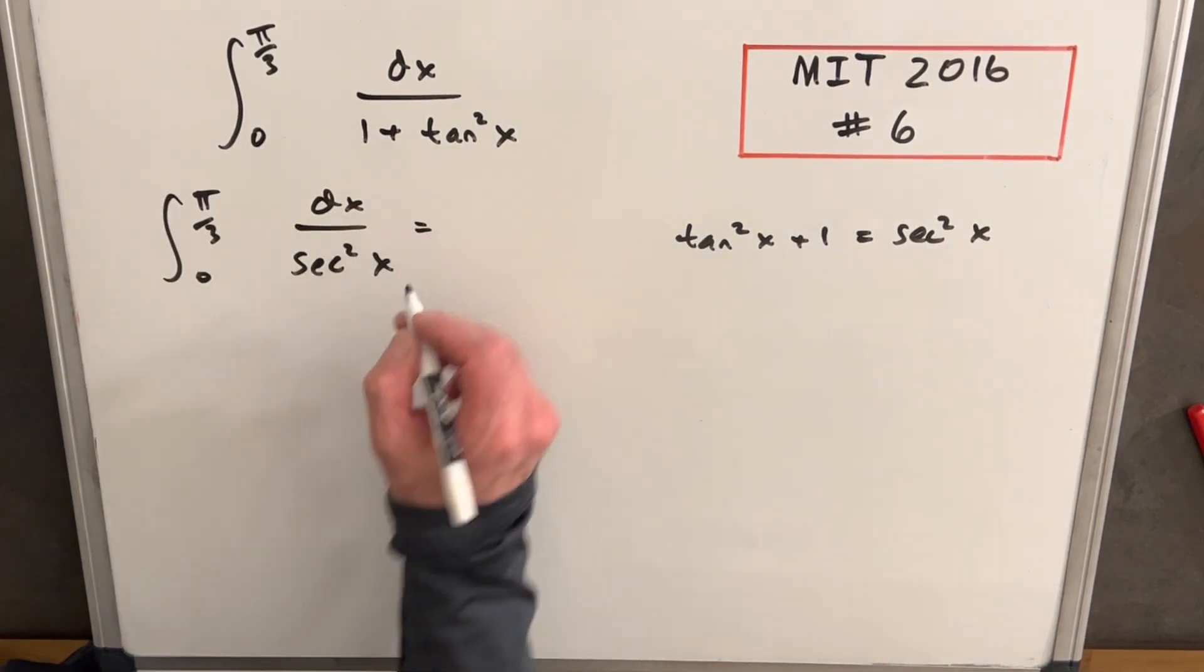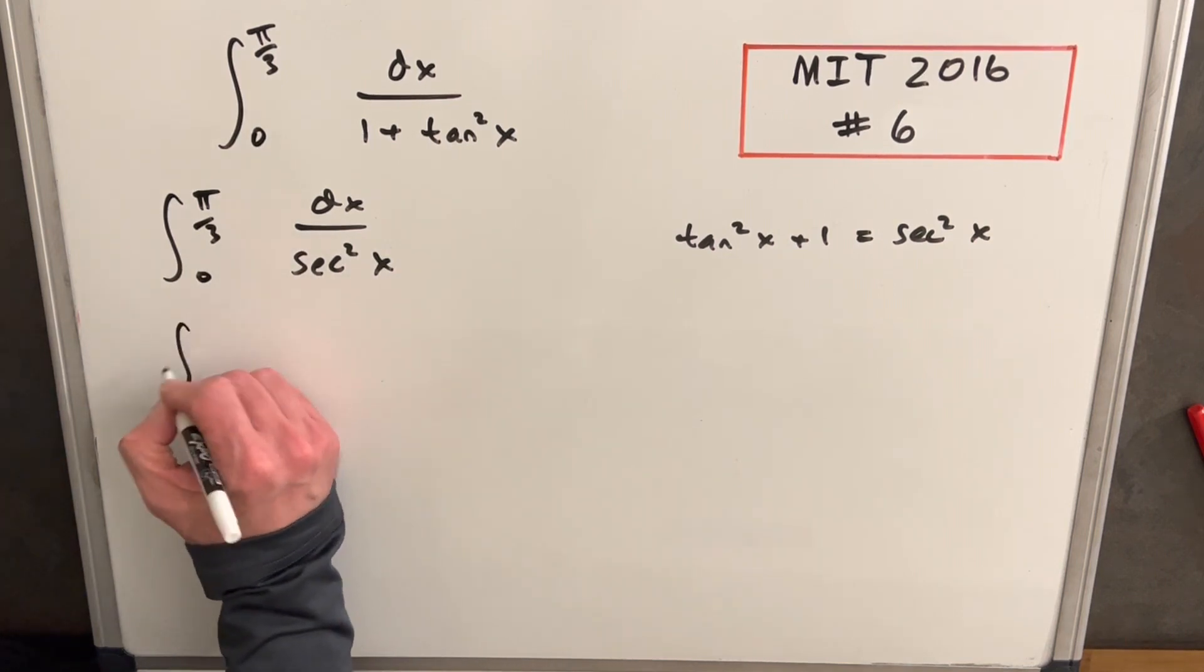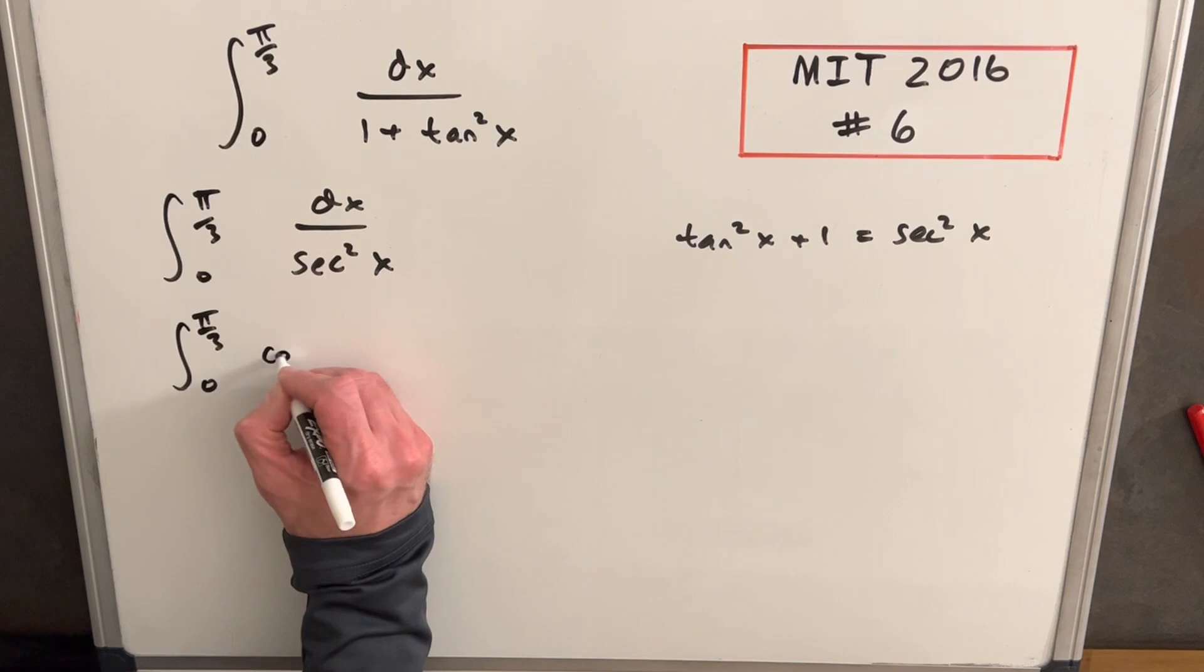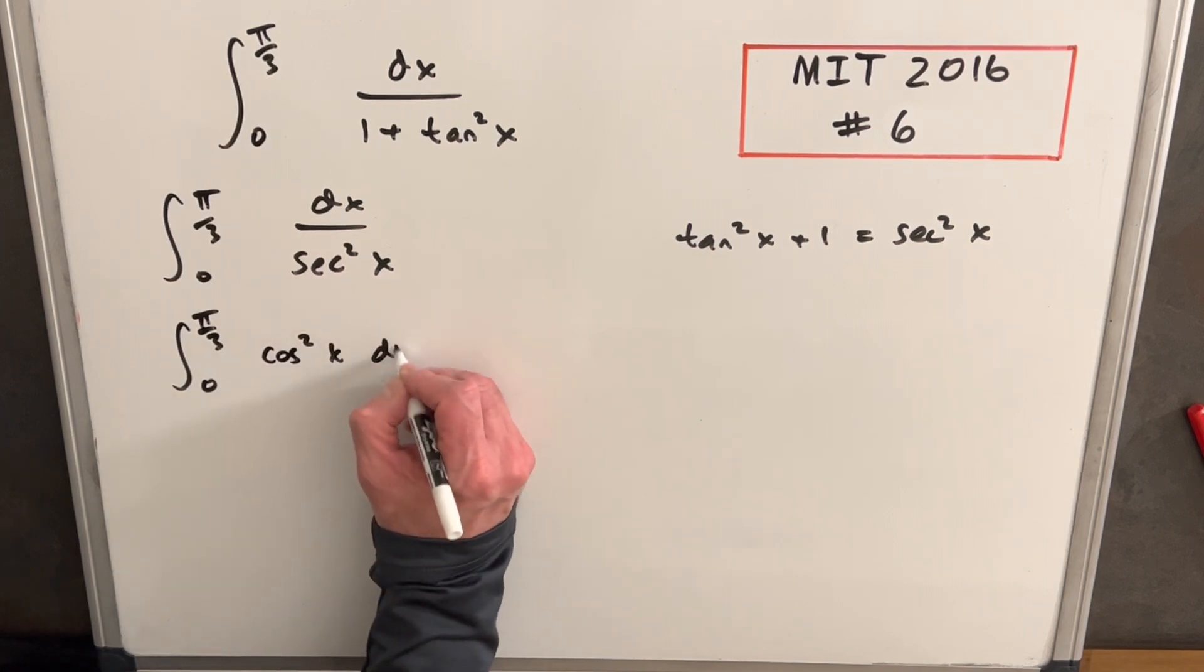Then from here, what we can do, but secant's just one over cosine. So we can write this in terms of cosines in the numerator as cosine squared x dx.